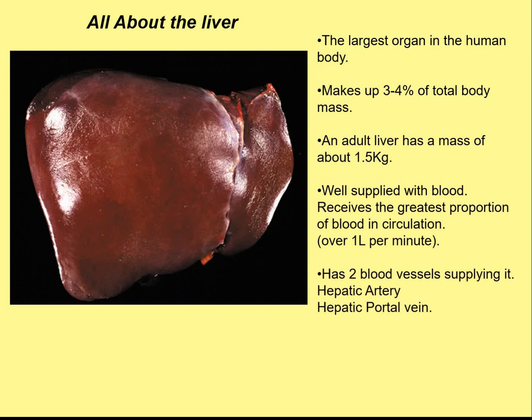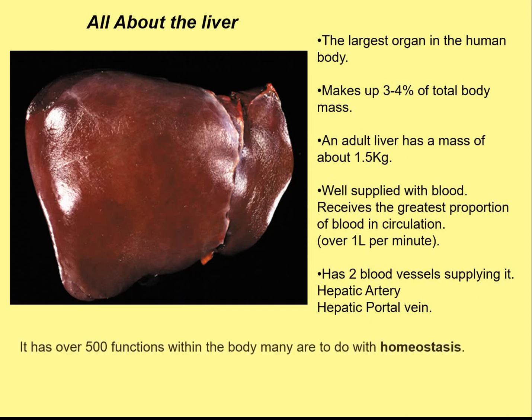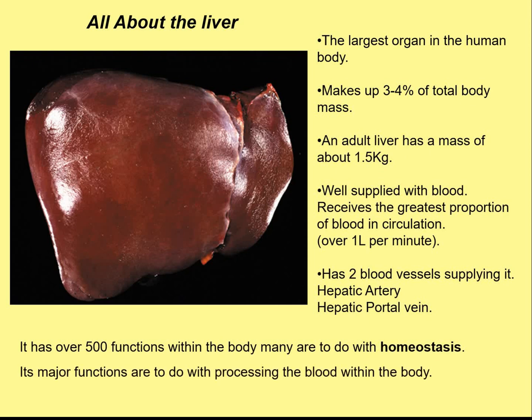The liver has two blood vessels supplying it: the hepatic artery and another blood vessel called the hepatic portal vein, which goes from the digestive system to the liver — so it's unusual. You'll obviously also have a blood vessel removing blood, which is the hepatic vein. The liver has over 500 different functions, and most of them are to do with maintaining constant body conditions, which is called homeostasis, which we'll look at in later lessons in year 11. So it's really to do with processing the blood within the body.